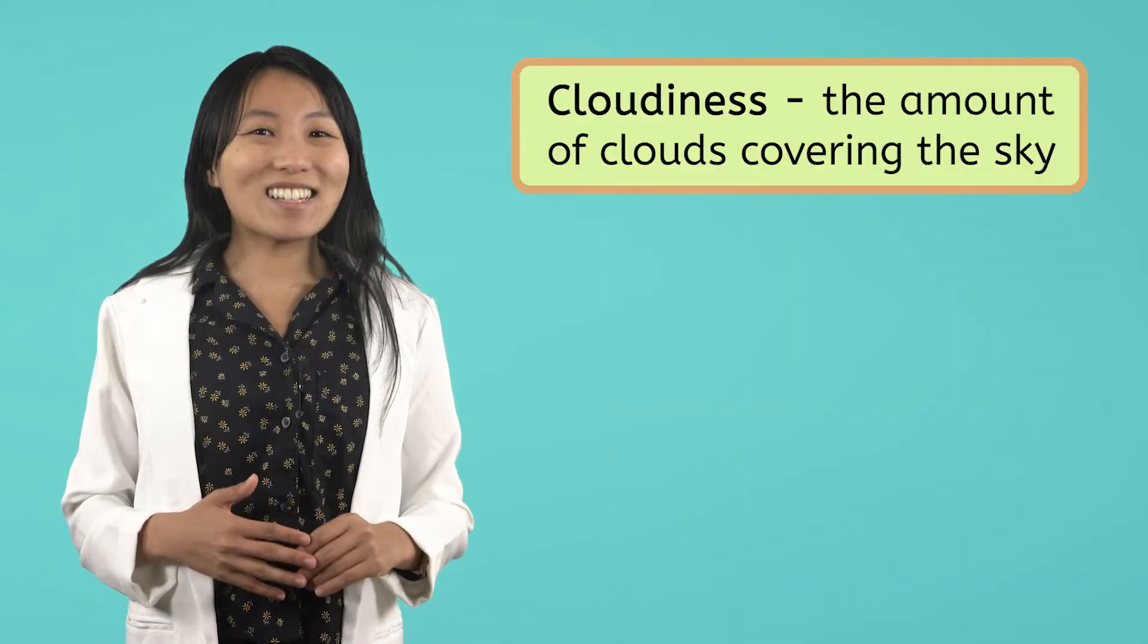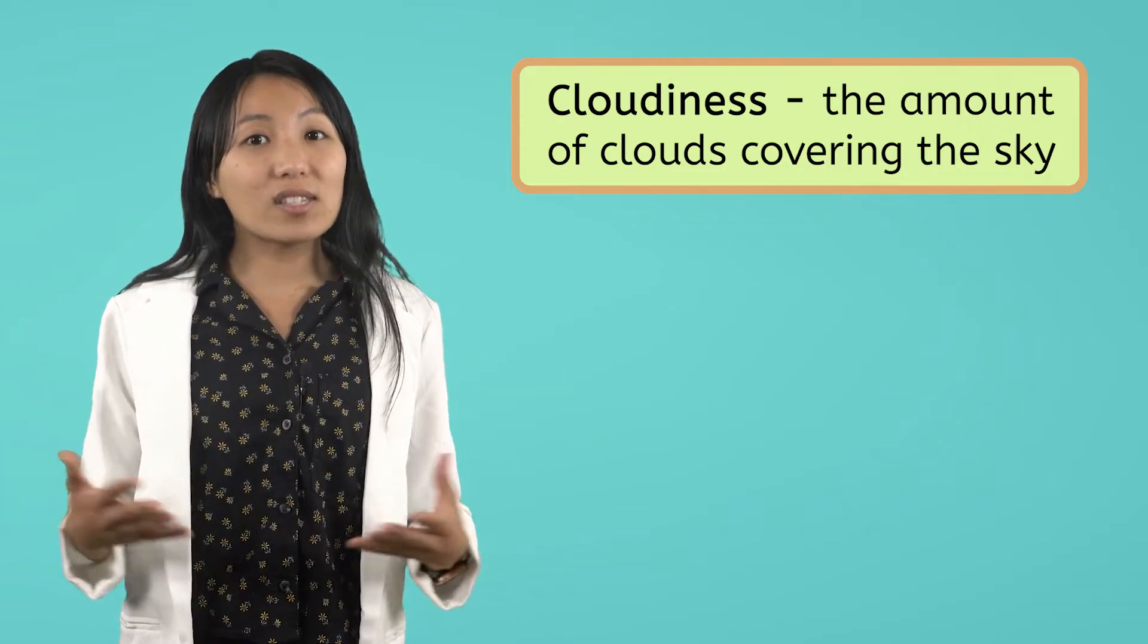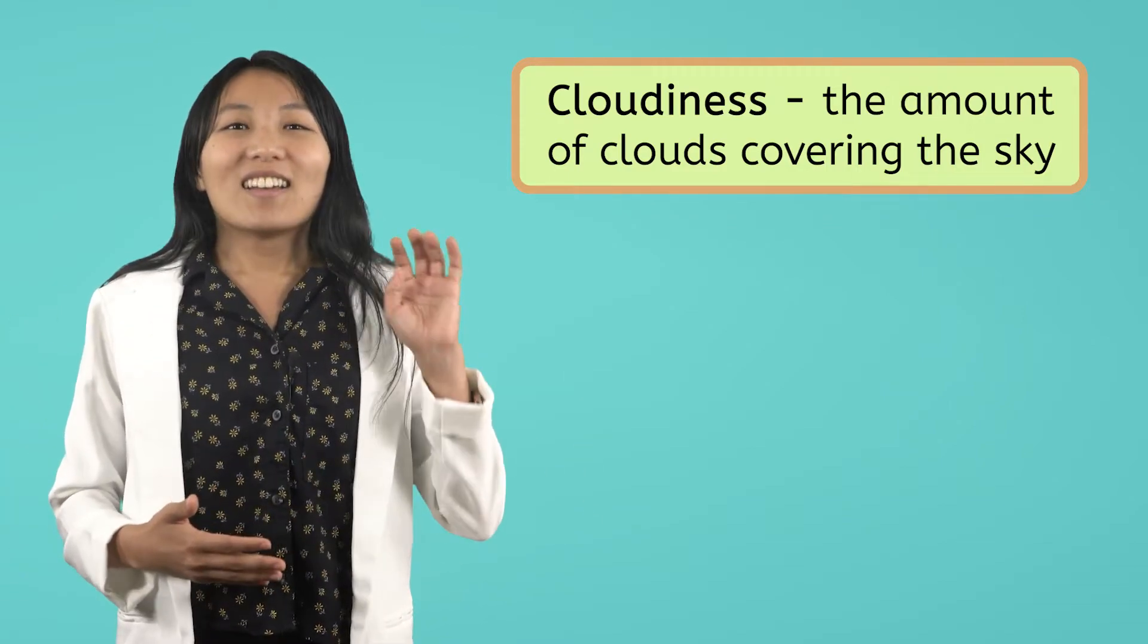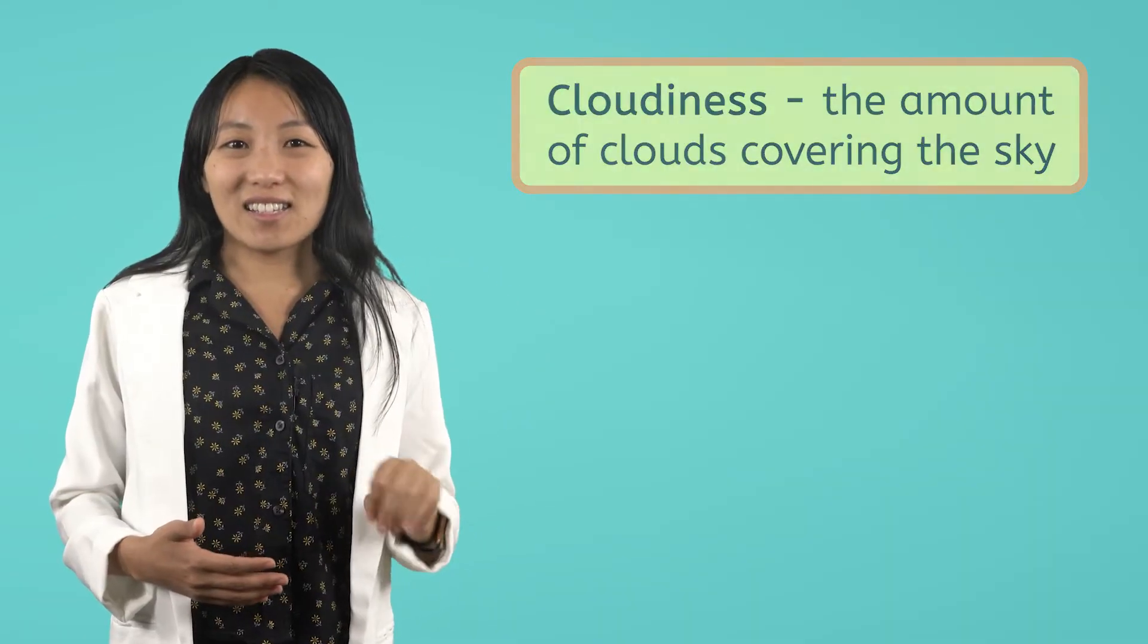Hey, I just mentioned another element of weather. Cloudiness. Cloudiness is the amount of clouds covering the sky. There are four categories of cloudiness. Clear, which means there are barely any clouds in the sky. Partly cloudy, which means there are a few clouds. Cloudy, which means the sky is mostly covered with clouds. And overcast, which means the sky is completely covered in clouds. Looking out the window today, we are definitely overcast. What is the cloudiness like where you are today?